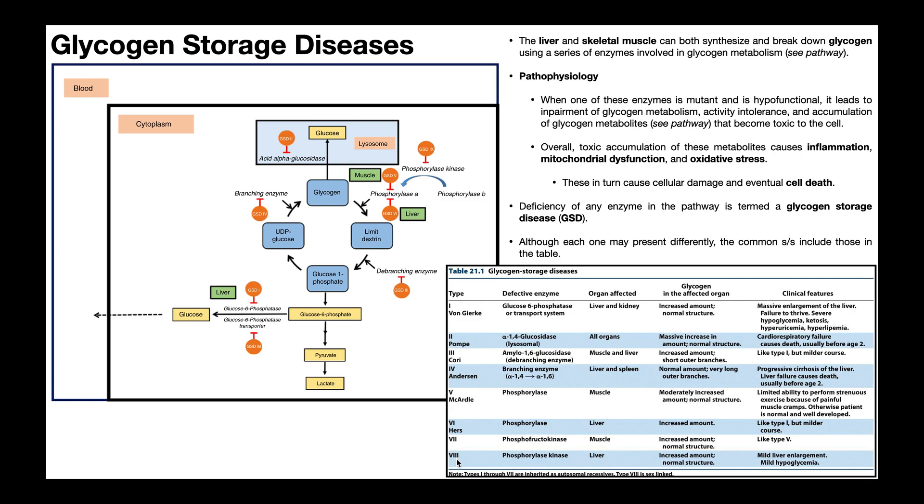Then we have type 8 glycogen storage disease, which is a deficiency of this enzyme over here, phosphorylase kinase. Now you'll notice this actually says type 9 here. I'll get to that in a minute. In any case, phosphorylase kinase is necessary for activating phosphorylase B into its active form, phosphorylase A, that we saw a few minutes ago. This form of phosphorylase kinase is found in the liver. As a result of this deficiency, you would have mild liver enlargement, mild hypoglycemia.